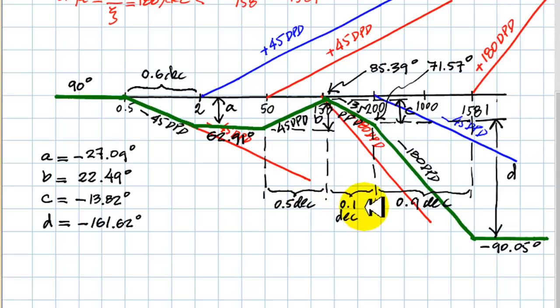The corresponding drops or climbs, B, C, D, appear down here. With those, we compute the values at each knee: here, 85.39 degrees; in this one, 71.57 degrees; and finally the exit value, negative 90.05 degrees.